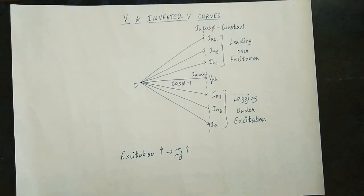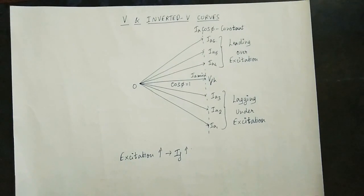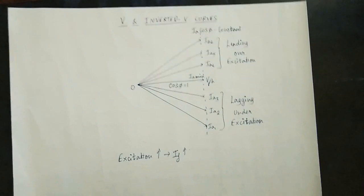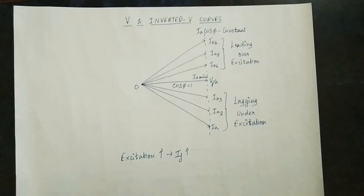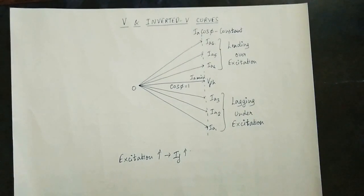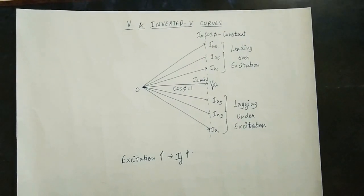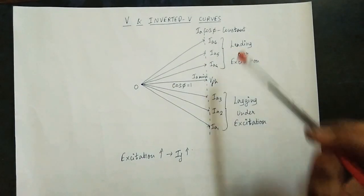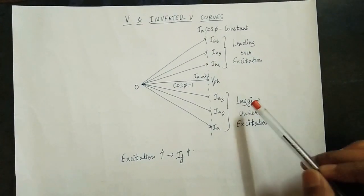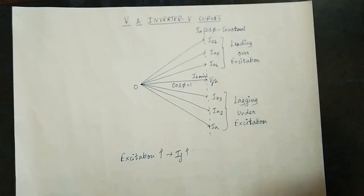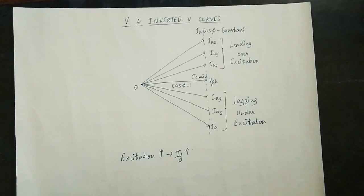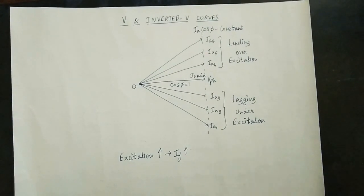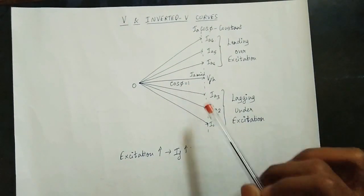First, we will talk about the V curve — the English alphabet V shape. We will obtain a curve, which is just a graph. It's an inverted V curve for the synchronous motor. The key point is: over-excitation gives a leading power factor, and under-excitation gives a lagging power factor. The current is varying across over-excitation, under-excitation, normal excitation, and critical excitation.